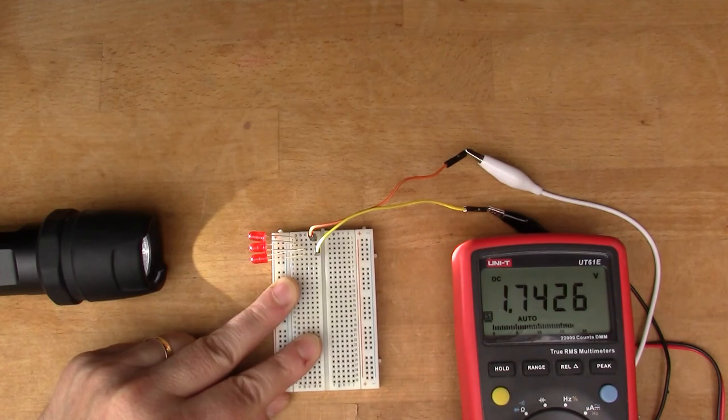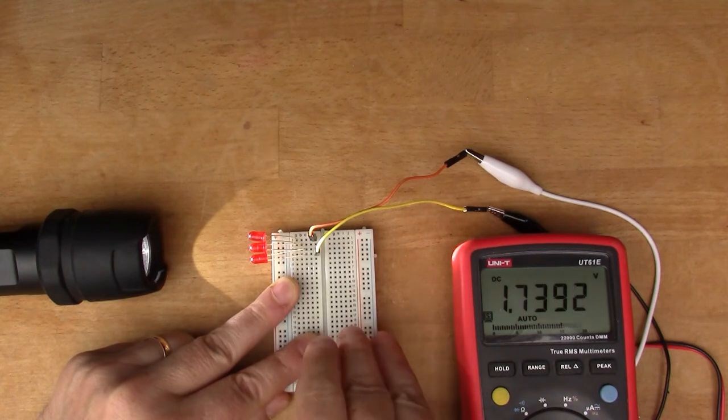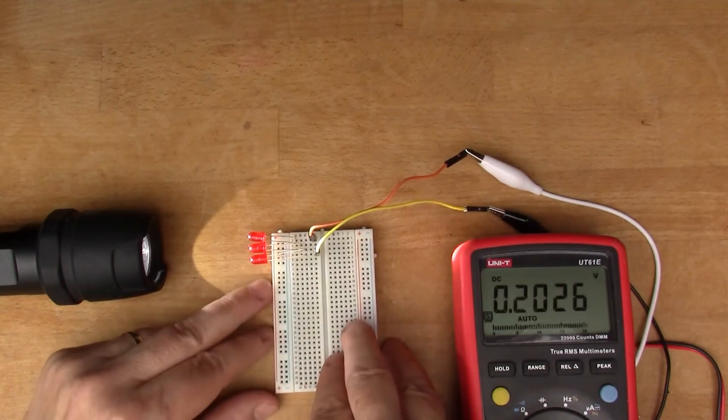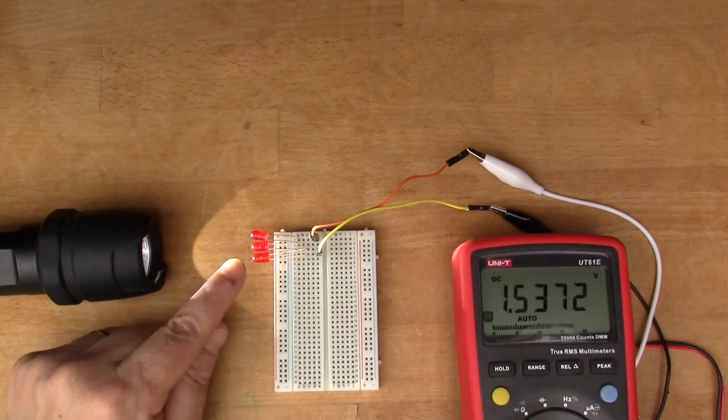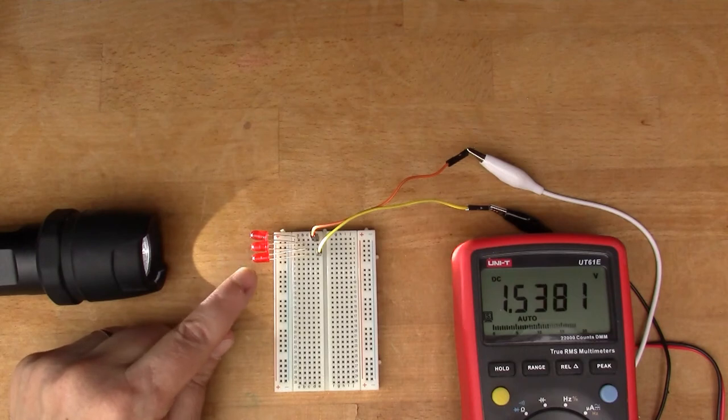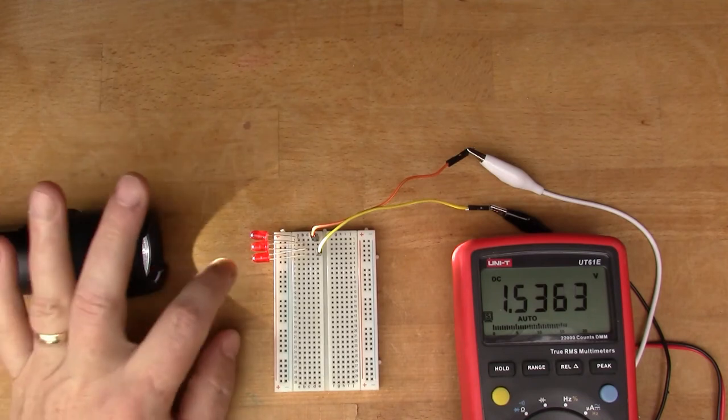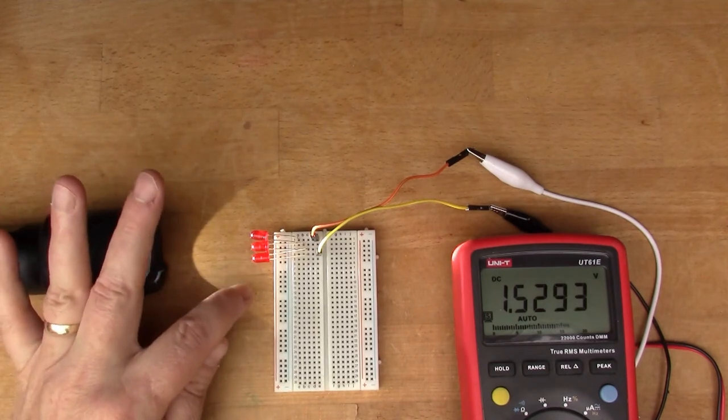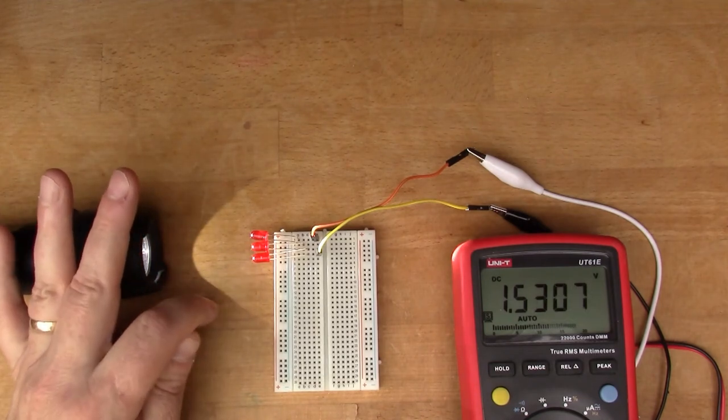So yes, we do seem to be able to add the voltage if we add more LEDs, which kind of makes sense when you think about it because the voltage is caused by the photons hitting the p-n junction and causing some electron movement. So the more LEDs you've got, the more voltage you should get.